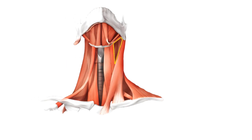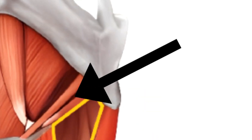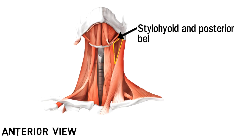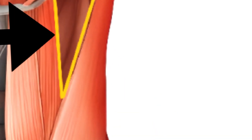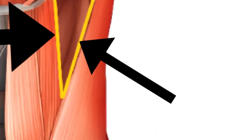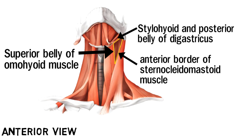Let's have a look at this triangle. These are the stylohyoid and posterior belly of the digastric that make the superior border. This is the superior belly of the omohyoid muscle that makes the anterior border. And this is the anterior border of the sternocleidomastoid that makes the posterior border. So this triangle is the carotid triangle.